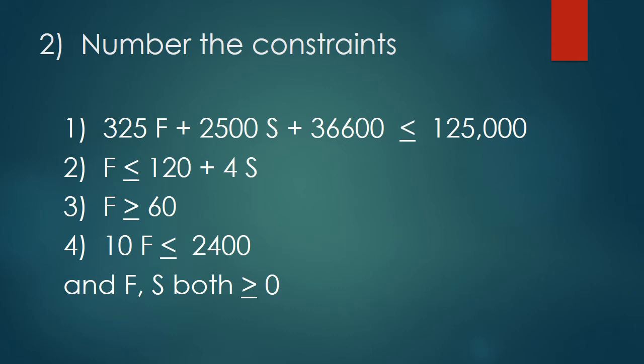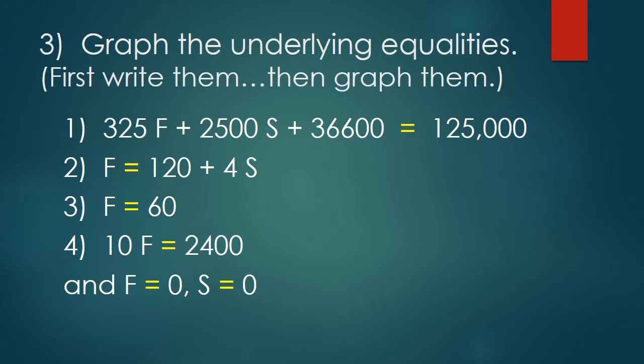Now, the first thing I'm going to do with these inequality constraints is to replace every one of the inequality symbols by an equal sign. The reason for that is that a linear equality always graphs as a straight line. A linear inequality always graphs as a straight line and everything on one side of that line. Let's get the line first, and we'll worry about which side is the good one later.